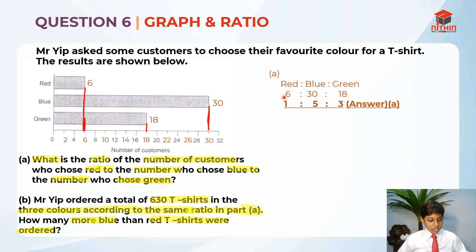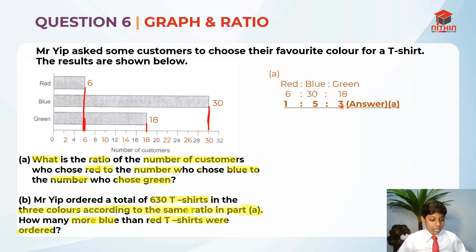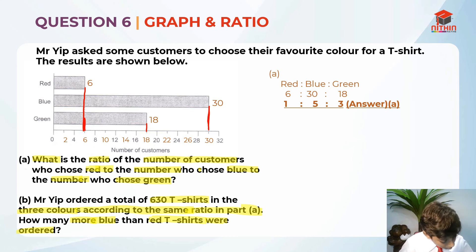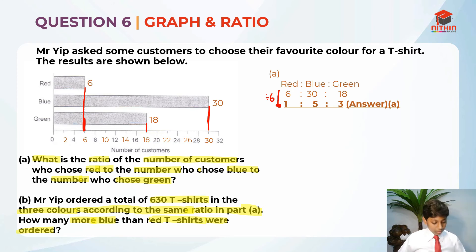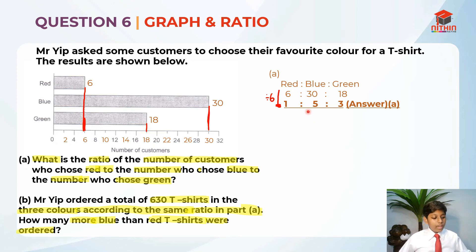We divide each side by 6. So 6 divided by 6 is 1, 30 divided by 6 is 5, and 18 divided by 6 is 3. So 1 is to 5 is to 3 is the answer for part A.